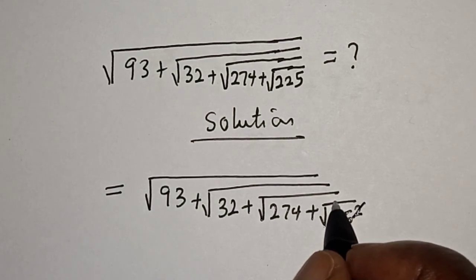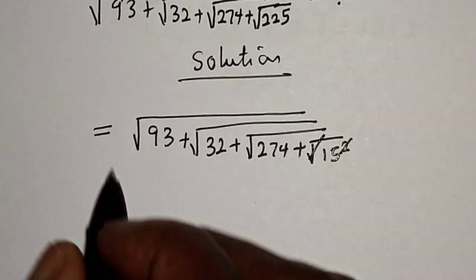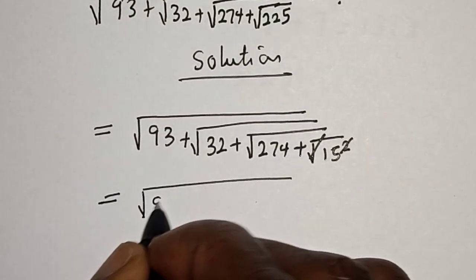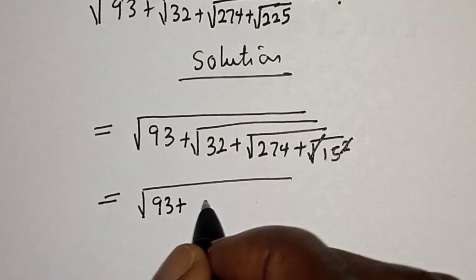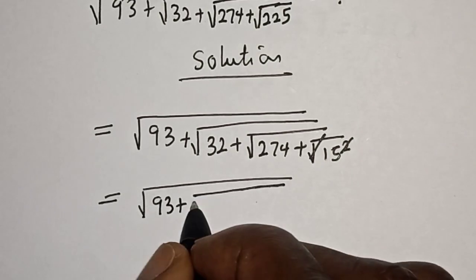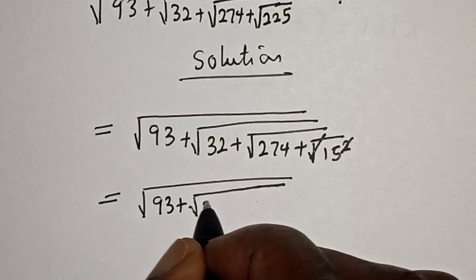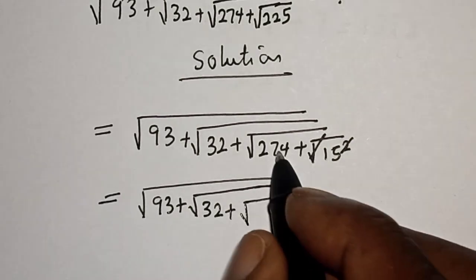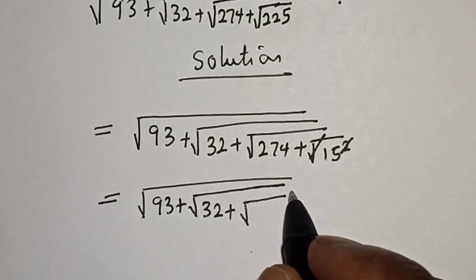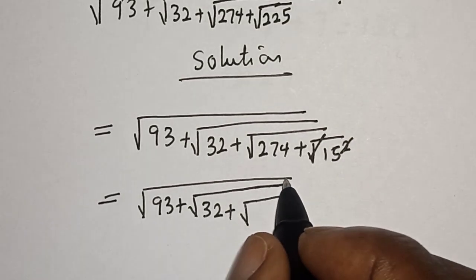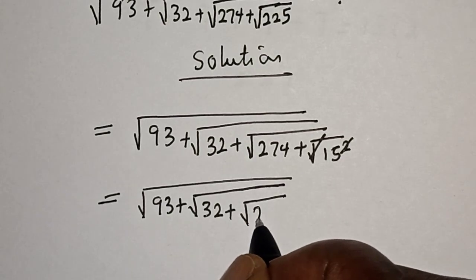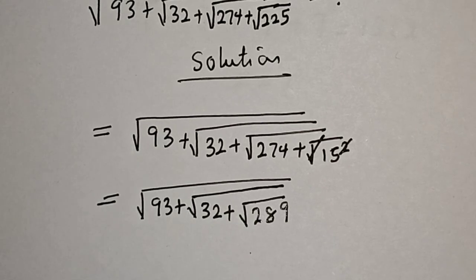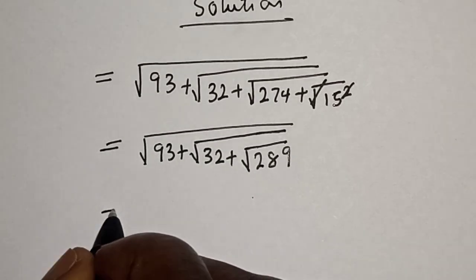We square 15, so that cancels, and we have square root of 93 plus square root of 32 plus square root of 274 plus 15, which equals 289.